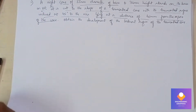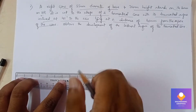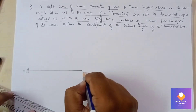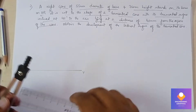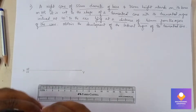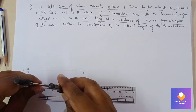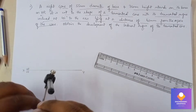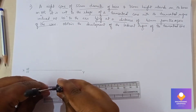First, we draw an elevation. We take a compass and measure 27.5 mm — since the diameter is 55 mm, we consider the radius of 27.5 mm — and draw a circle. So the radius to use is 27.5, not 55. Take 27.5 from the scale and construct the circle.